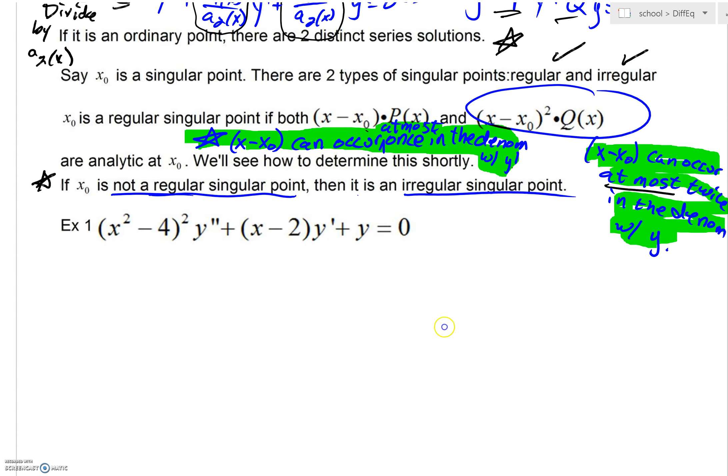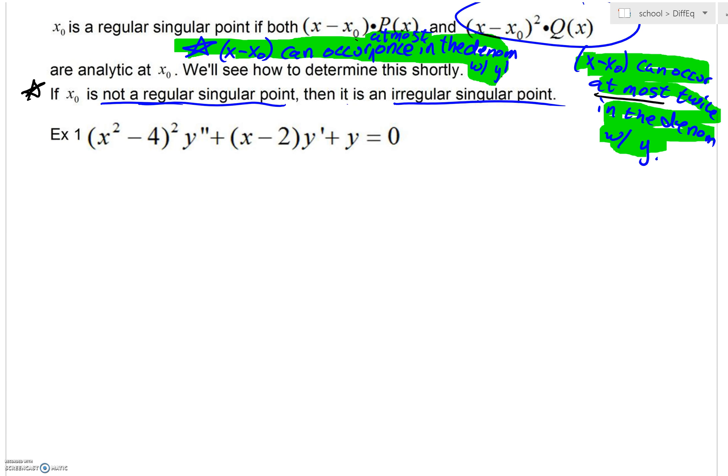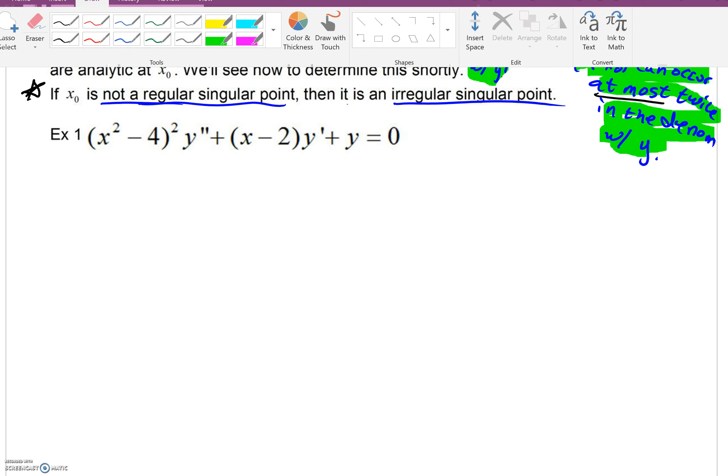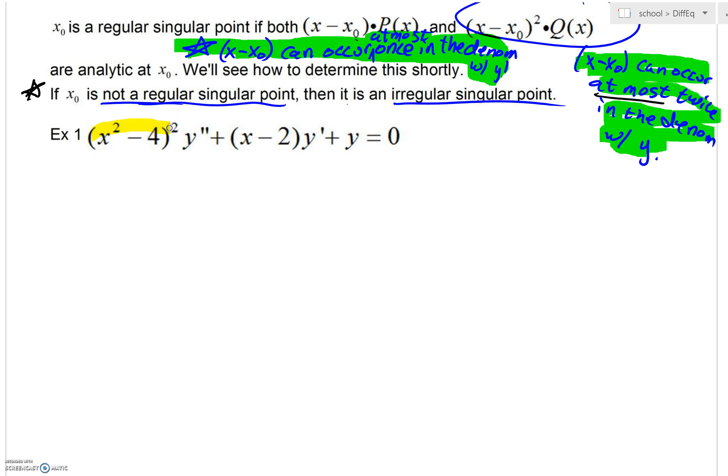So let's do some problems. This leading coefficient function right here is what's going to drive this whole process. We're going to be interested in what that really is going to be in danger of equaling 0 with. So (x² - 4), that factors, doesn't it? What does x² - 4 factor into? (x + 2) and (x - 2). But you're going to have to have both of them squared because the whole quantity is squared, right?